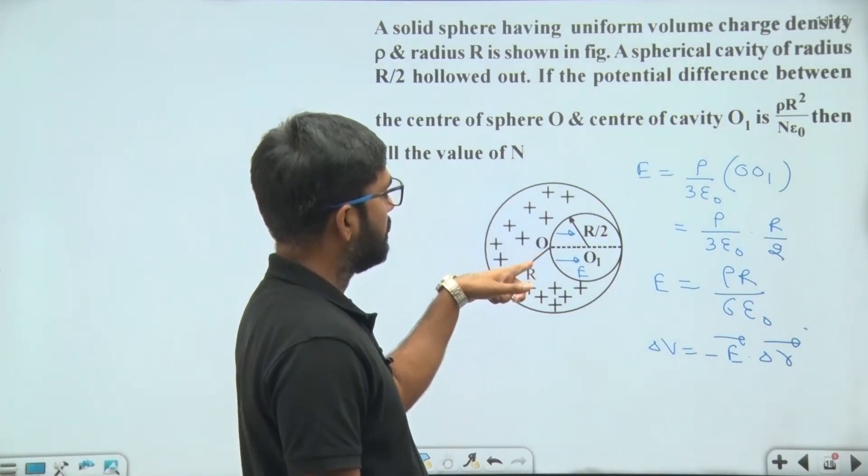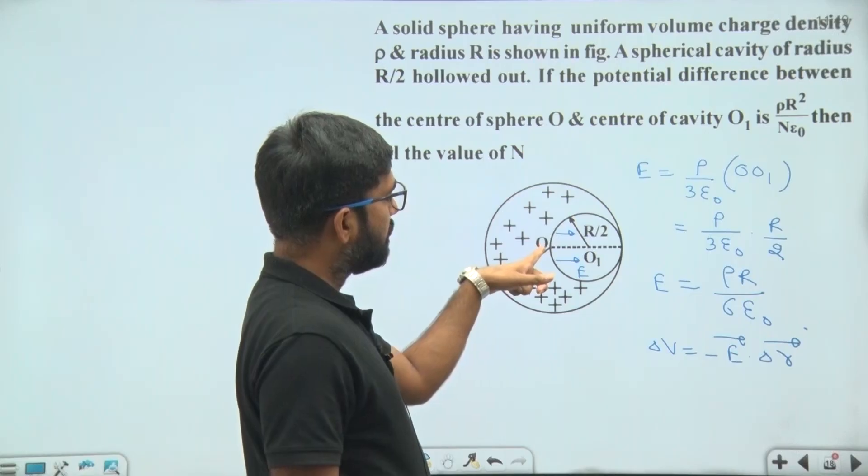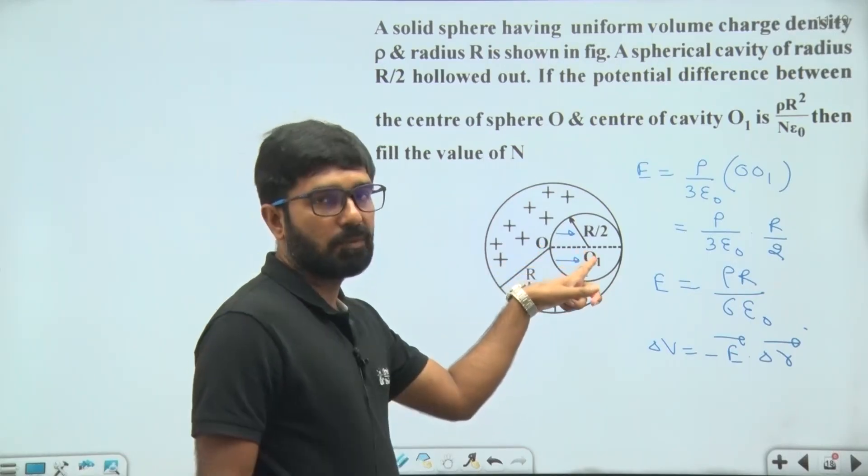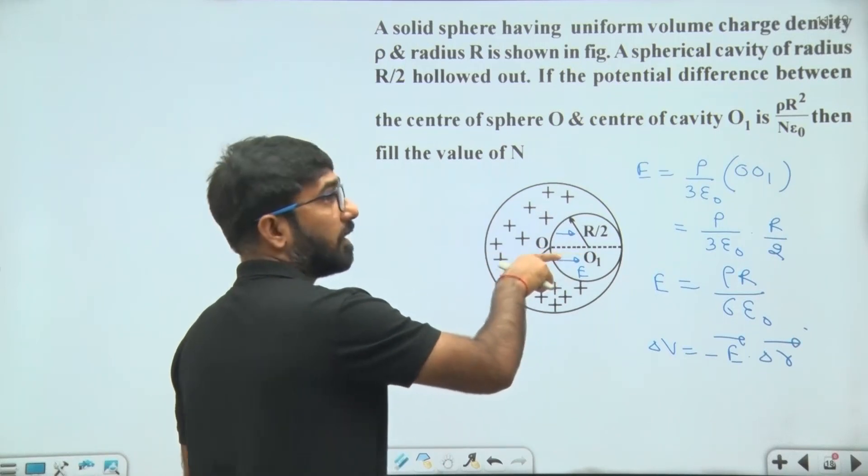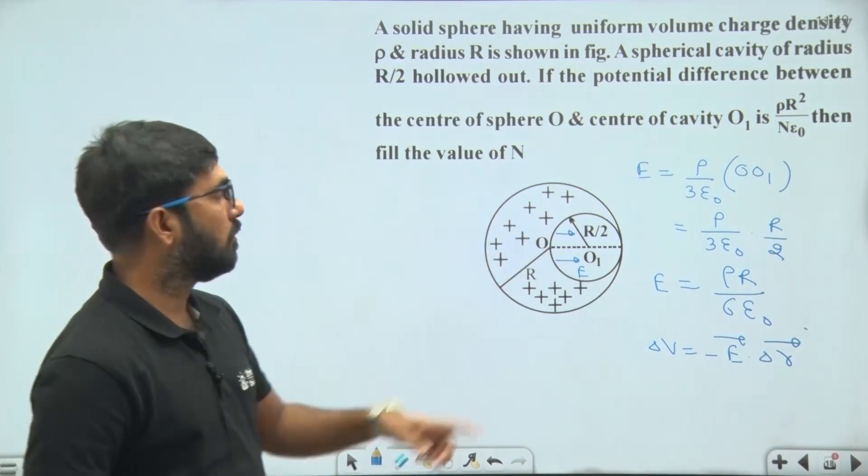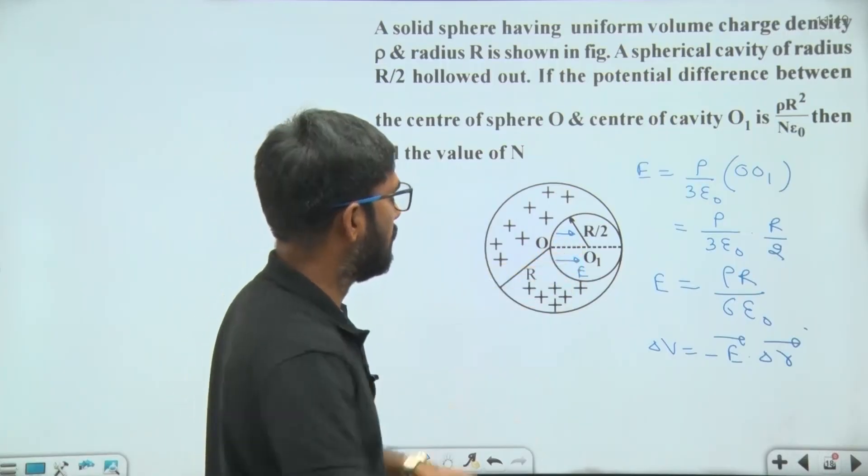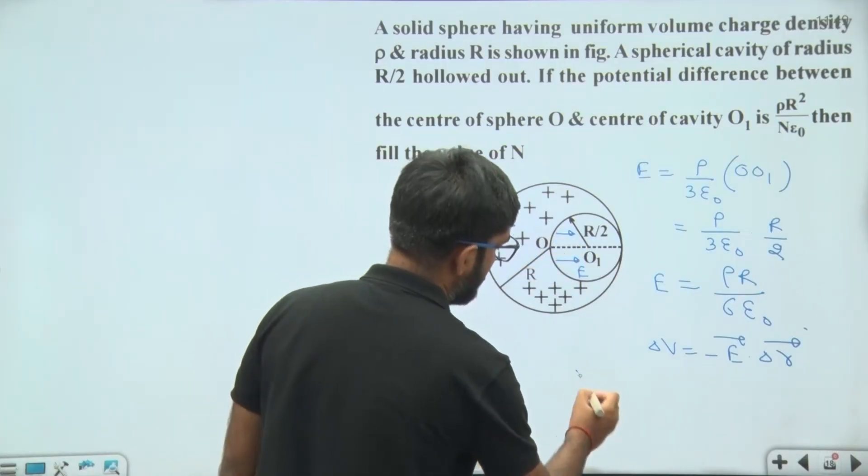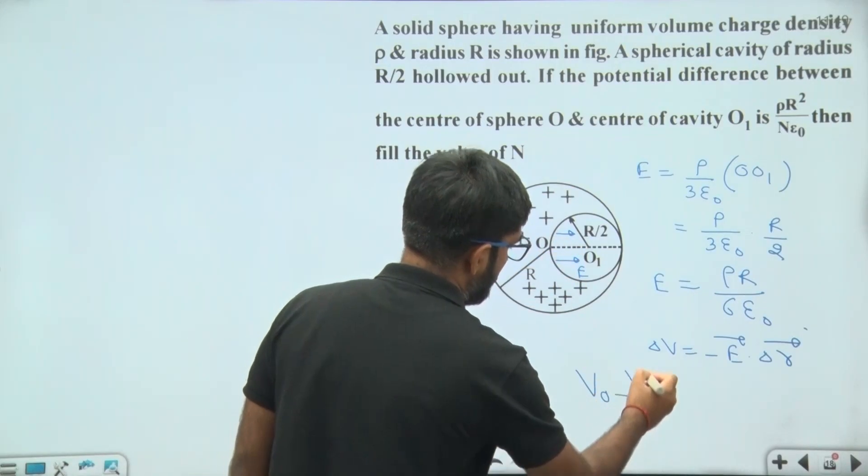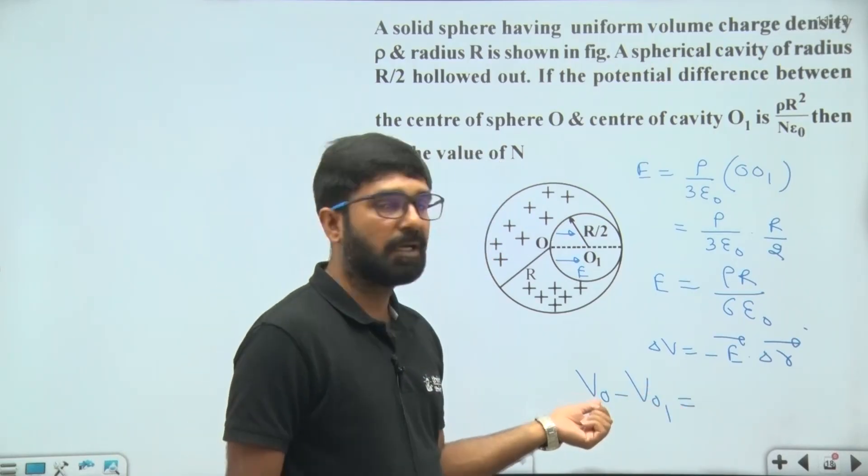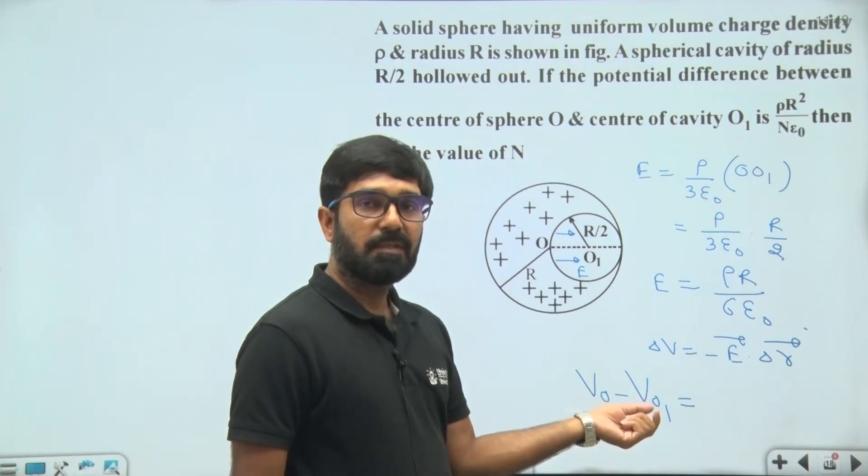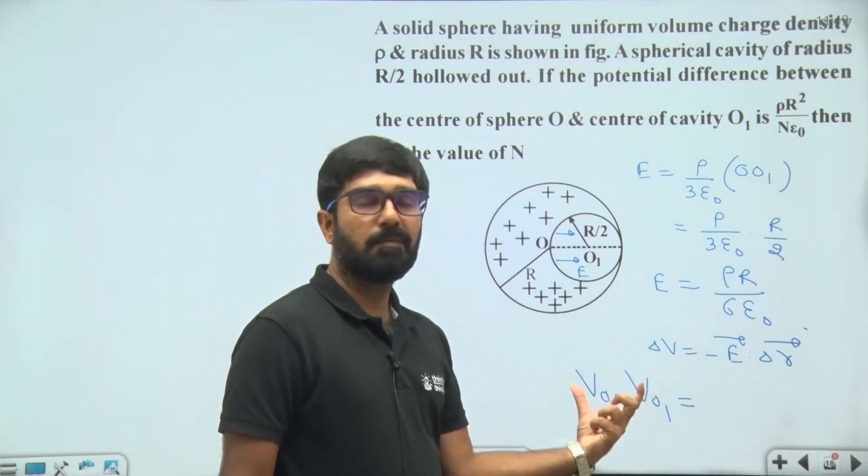We know that the potential of O will be higher than potential of O1 because in the direction of electric field electric potential decreases. Then O will be at higher potential and O1 will be at lower potential. Then directly we can write potential of O minus potential of O1. If we know that this value is high, this value is low, then this value will be positive.